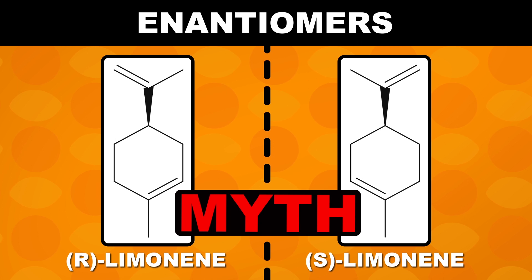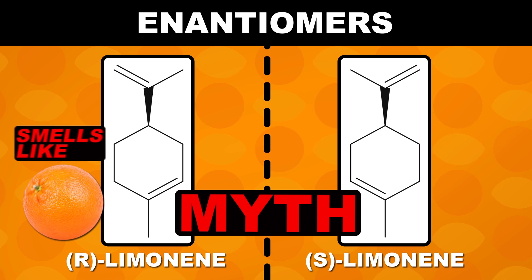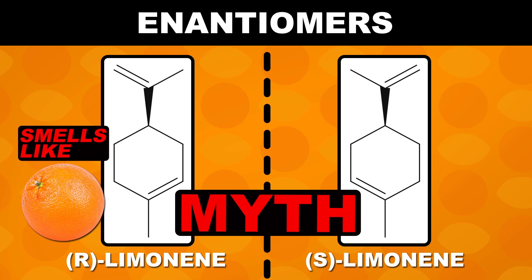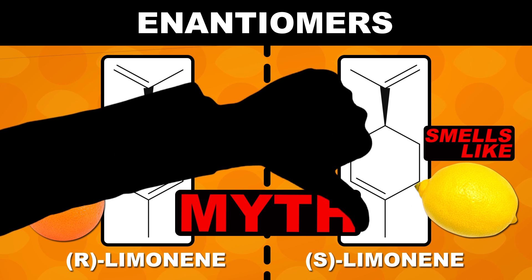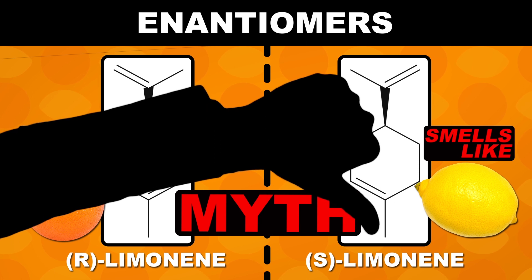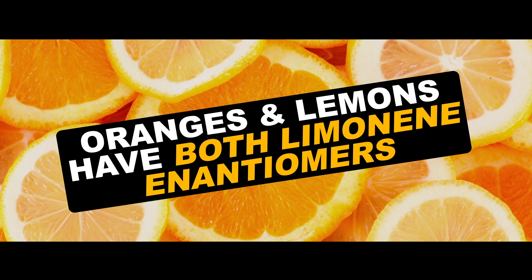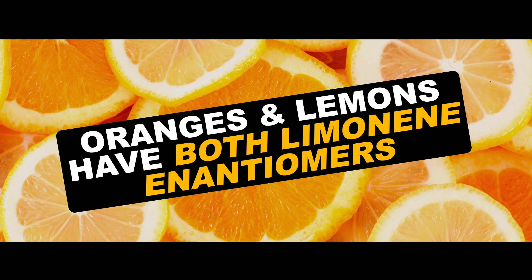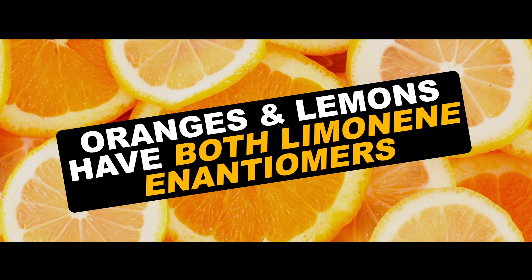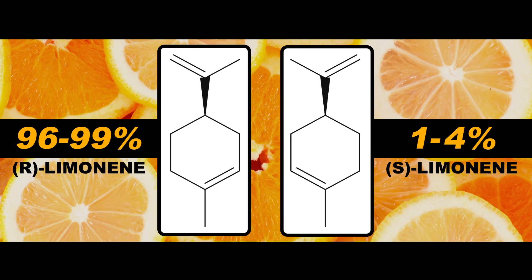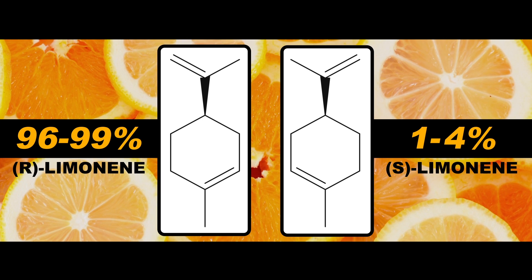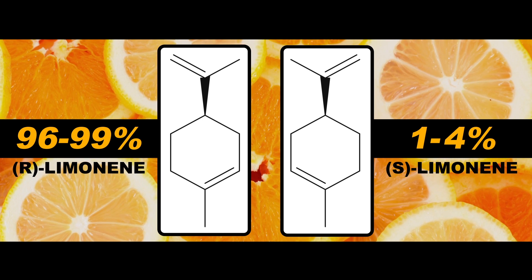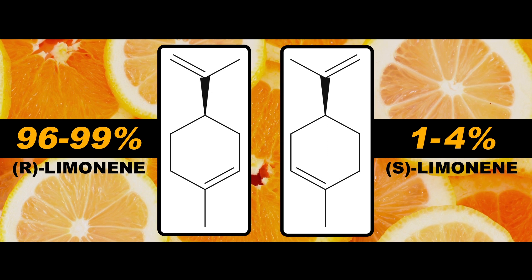The myth that we found everywhere claims that orange oil has one limonene enantiomer that smells like oranges, and lemon oil contains the lemon-scented mirror image molecule. This is completely false. As it turns out, oranges and lemons each have both of these molecules — except the overwhelming majority of the limonene, 96 to 99%, in both cases is in the R configuration, and only 1 to 4% is in the S configuration.